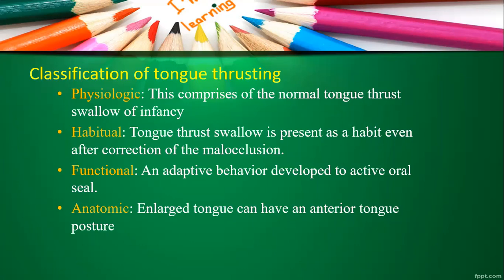Anatomic tongue thrust is due to some kind of anatomical defects or changes. For example, an enlarged tongue can cause anterior tongue posture. In cases of macroglossia, because of this anatomy, the child will gradually develop a tongue thrust.